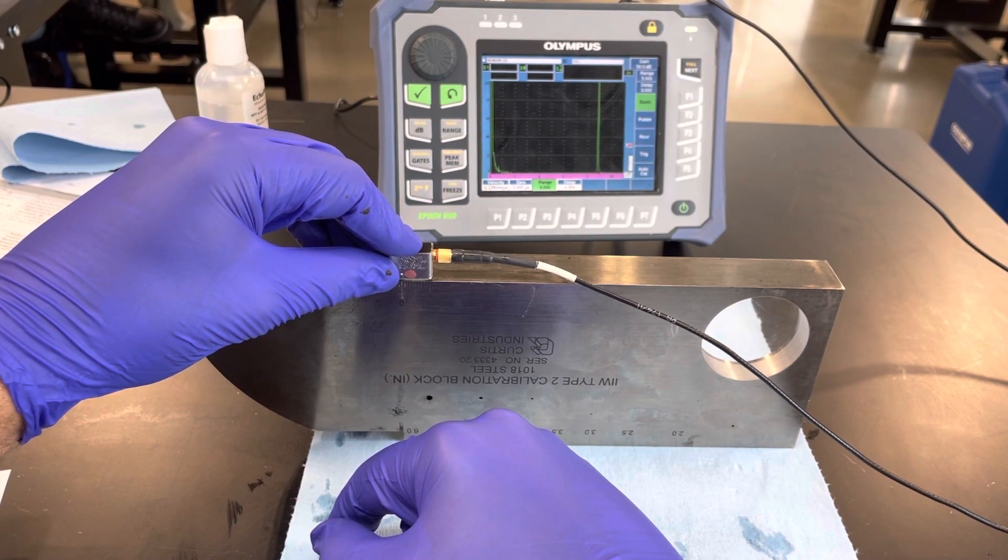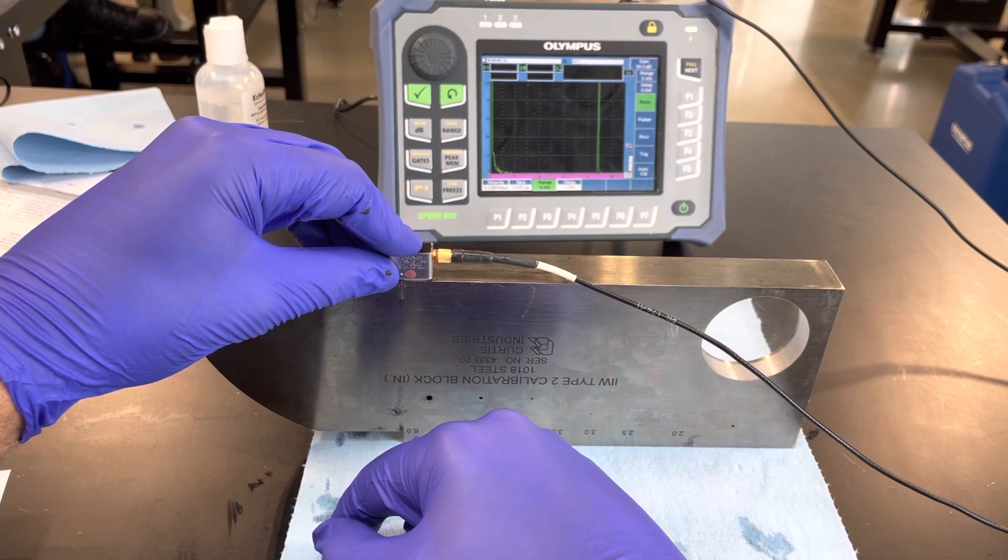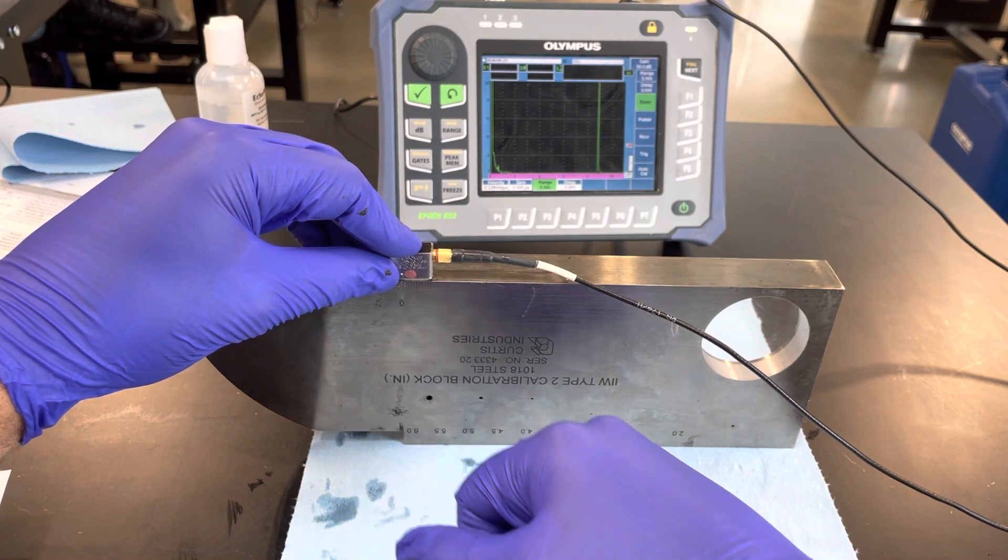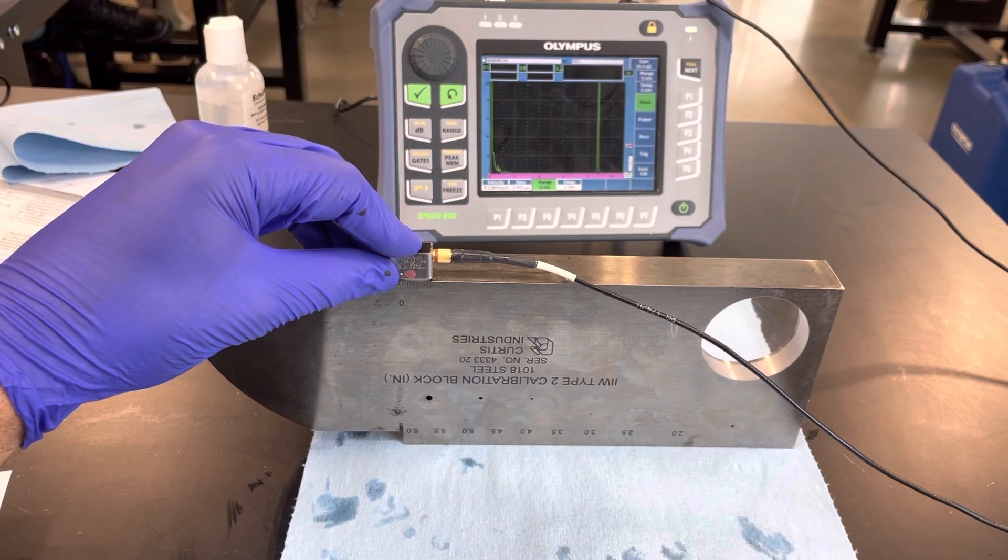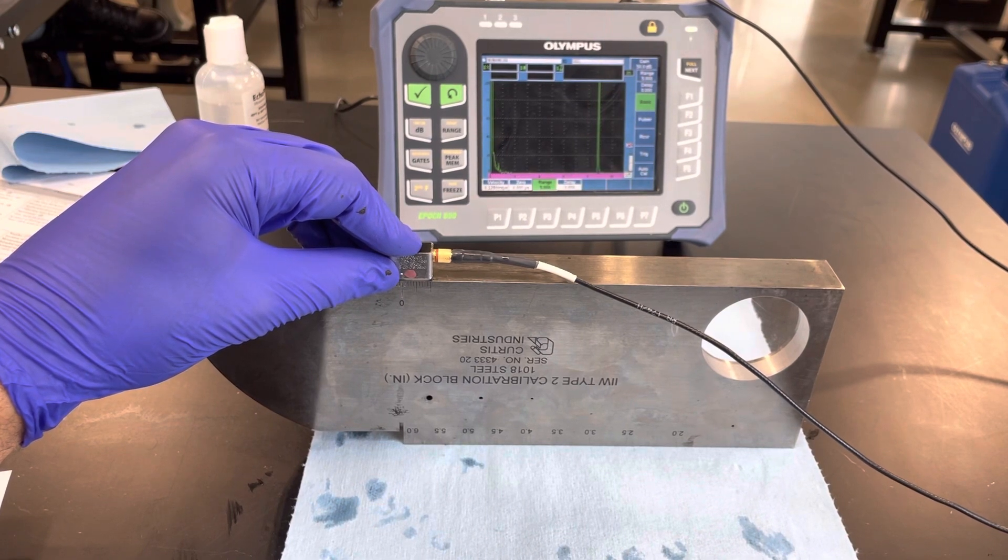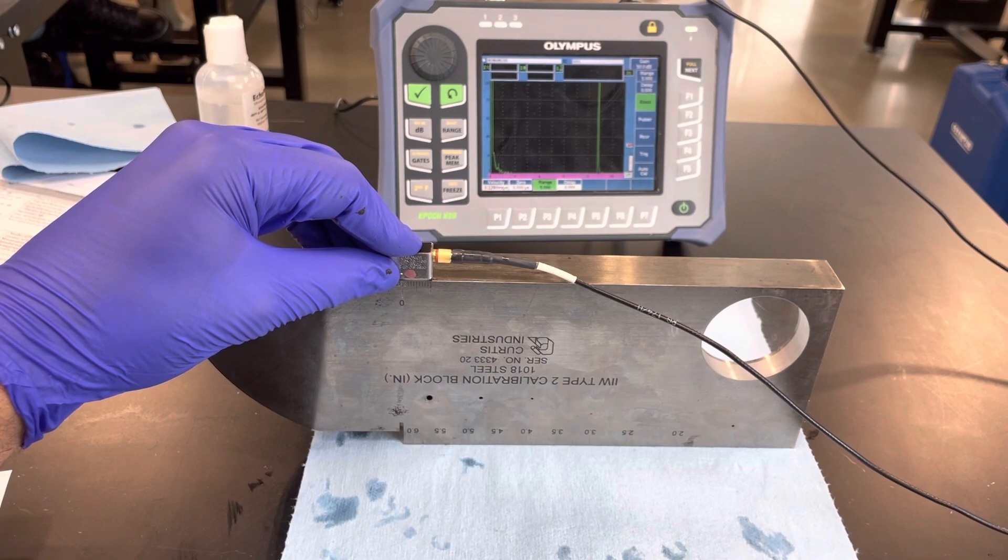You can see the white is right on the zero and you see that signal is off the screen. So this transducer is definitely, the point of incidence is accurate. This will be a pass for me.